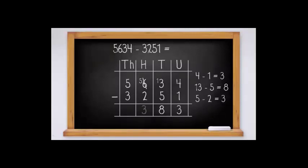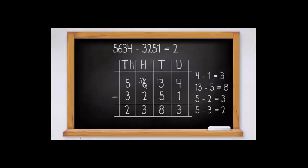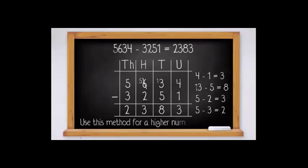Now we move on to the hundreds column — remember it's always top minus bottom. Five minus two equals three. We write three under the hundreds column. Next we move on to thousands place: five minus three equals two. We write two under the thousands column. Our final answer is 2383.